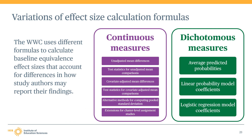The equations just covered for Hedges G and Cox's index are general effect size formulas. However, the WWC uses different variations on these general formulas to account for differences in how study authors reported their findings. When calculating Hedges G effect sizes for continuous measures, the equations vary depending on the type of information reported by study authors and whether the study used individual or cluster-level assignment to conditions. When calculating Cox's index effect sizes for dichotomous measures, the equations can also vary depending on the type of statistical information reported. Module 11 in this training series provides additional technical details for people interested in these variations.